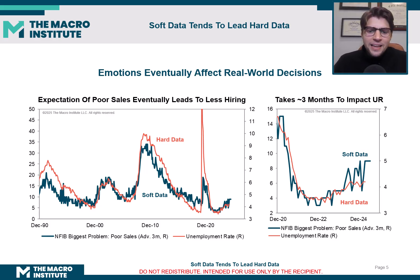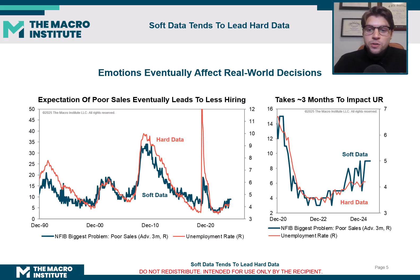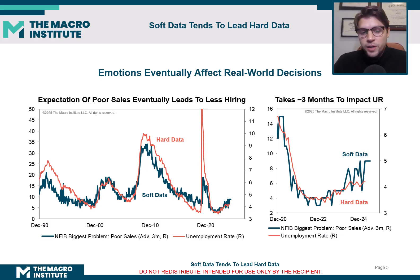I think this chart is a really great example of that. In blue, we have a soft data series — the NFIB Small Business Optimism Index. I actually included this series in one of my previous videos if you want to check that out.